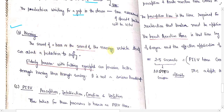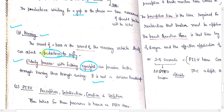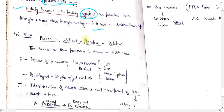The second physiological property is hearing. The sound of a horn or a nearing vehicle can alert a pedestrian to safety. Elderly persons with failing eyesight can perceive better through hearing. As age increases, eyesight decreases but hearing becomes more important — for road users as well as pedestrians, when the sound of a nearing vehicle arises.